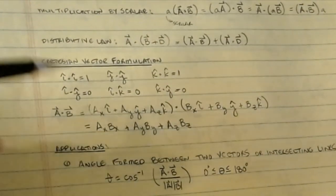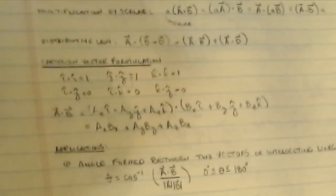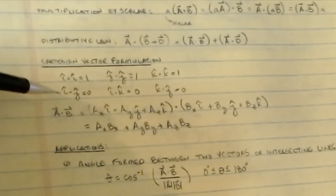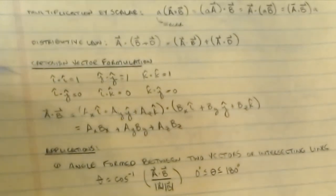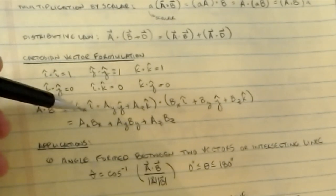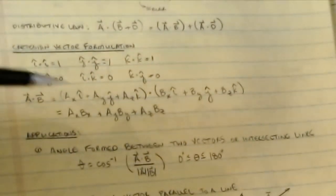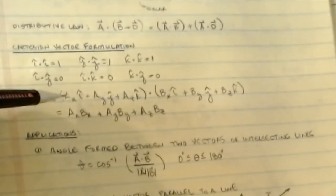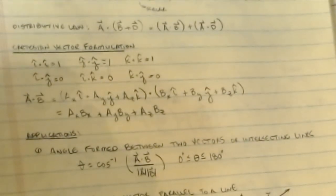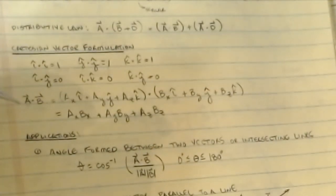A couple of key identities: i·i = 1, j·j = 1, k·k = 1. Anything else — i·j, i·k, k·j — is zero. This preserves the scalar value. So if I write vector A as Ax·i + Ay·j + Az·k and do the same for B, only the matching unit vector pairs survive. The result is that A·B = Ax·Bx + Ay·By + Az·Bz, which gives you a scalar value.